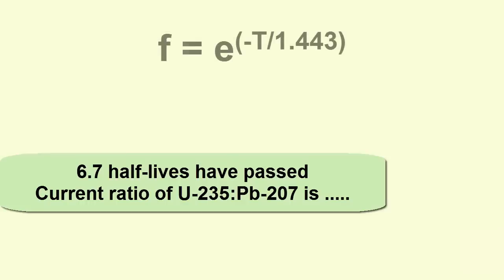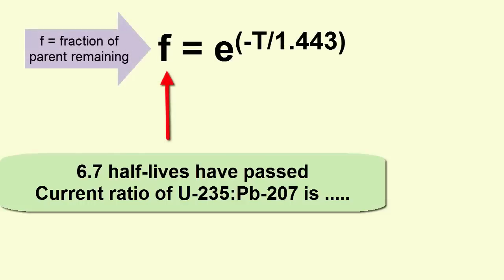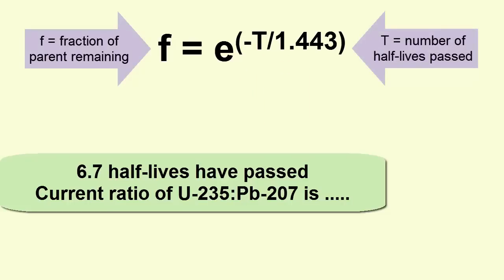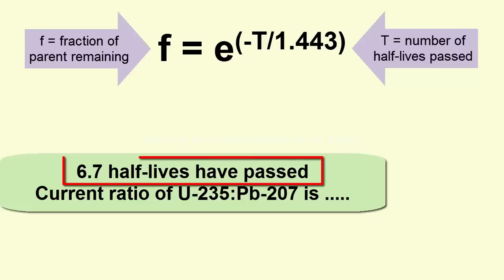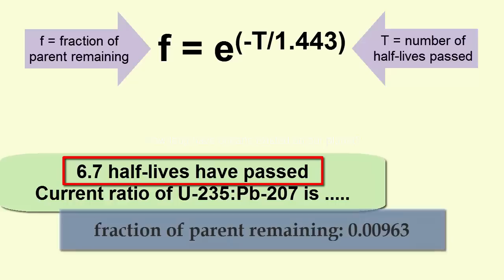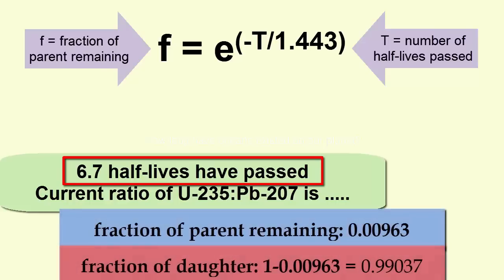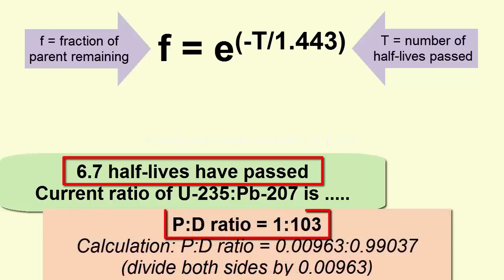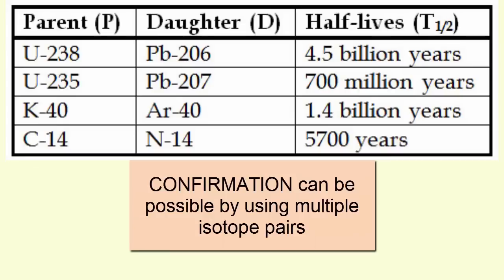To be more precise, we use this equation: the fraction of parent remaining equals e to the power of minus t divided by 1.443, where t is the number of half-lives past. Since t is 6.7, the fraction of parent remaining is 0.00963. The remaining 0.99037 must be daughter, and the ratio is 1 to 103. Calculating age using multiple radioactive isotope pairs is a method we use to confirm our dates.